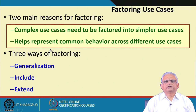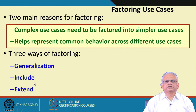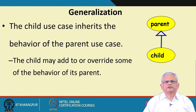Given that a use case is complex, there are three ways we can factor it. The first is called generalization, the second is include, and the third is extend. Let us see how these three techniques — generalization, include, and extend — can be used for factoring a complex use case.